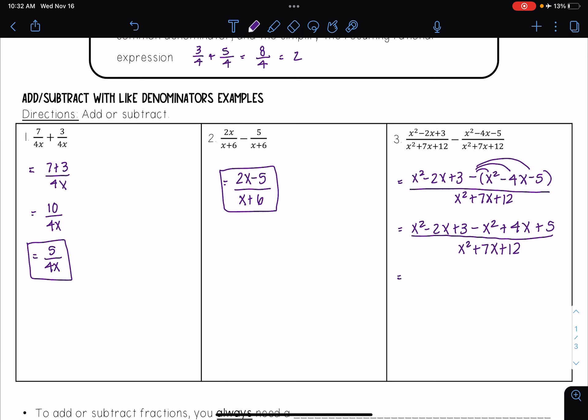And so when I simplify this out, I see those x² minus x² cancels out. Negative 2x plus 4x, I get 2x. 3 plus 5, I get 8. And now I need to see if I can simplify this. I'm going to factor both top and bottom. At the top, I see I have a GCF of 2. So I'm going to factor out a 2. So I have 2 times (x + 4).